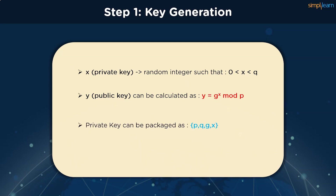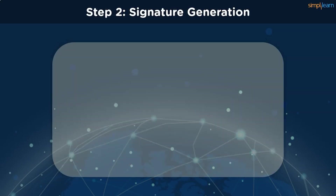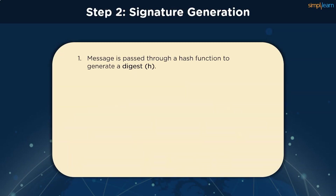The private key can then be packaged as a bundle which comprises the values of P, Q, G, and X. Similarly, the public key can also be packaged as a bundle having the values of P, Q, G, and Y. Once we're done with key generation, we can start verifying the signature and its generation.